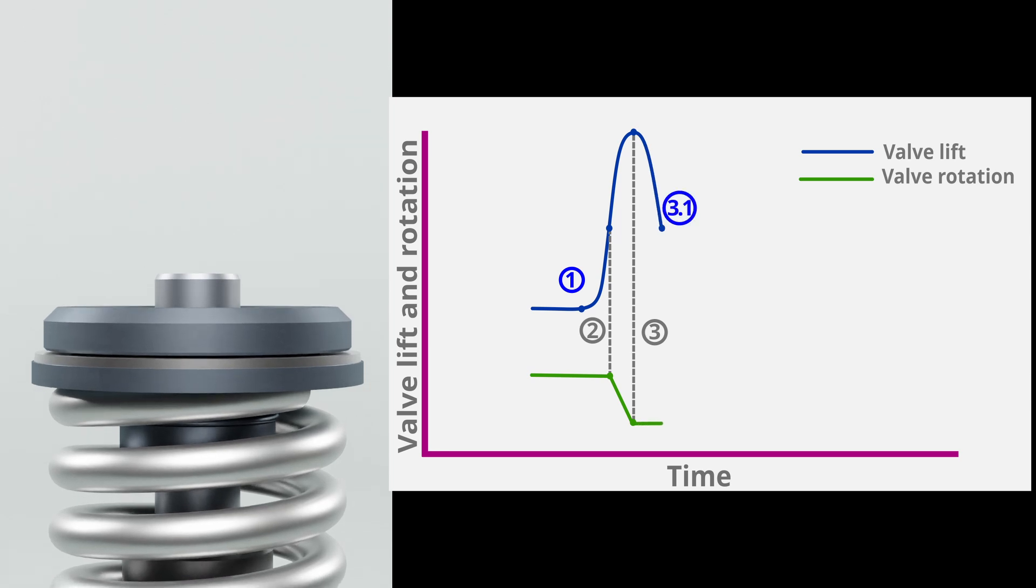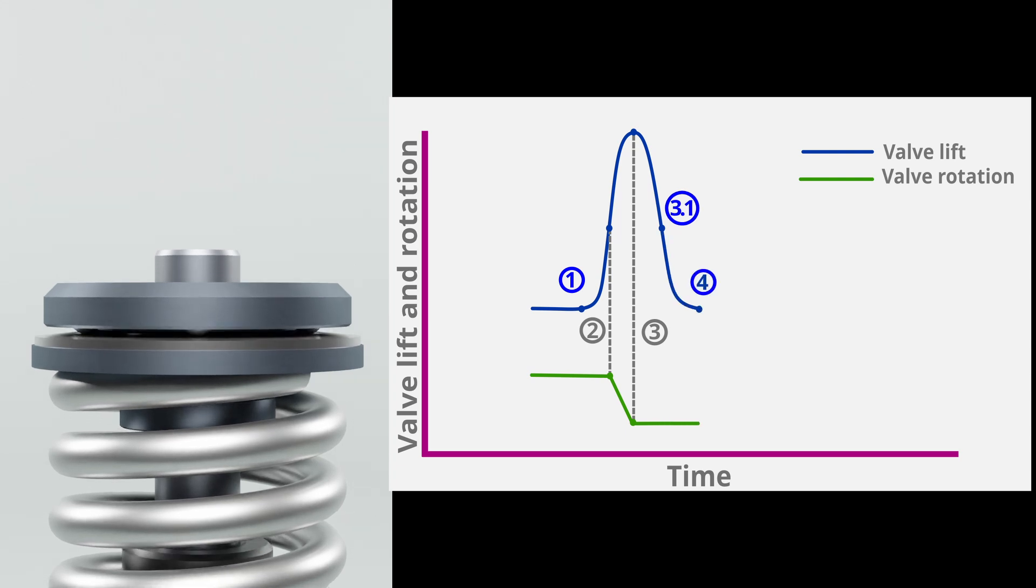From point 3 to 3.1, valve is halfway closed. Here disc spring is still in the compressed state. From point 3.1 to 4, disc spring resets to original position and steel balls move back to their original state and the cycle continues.